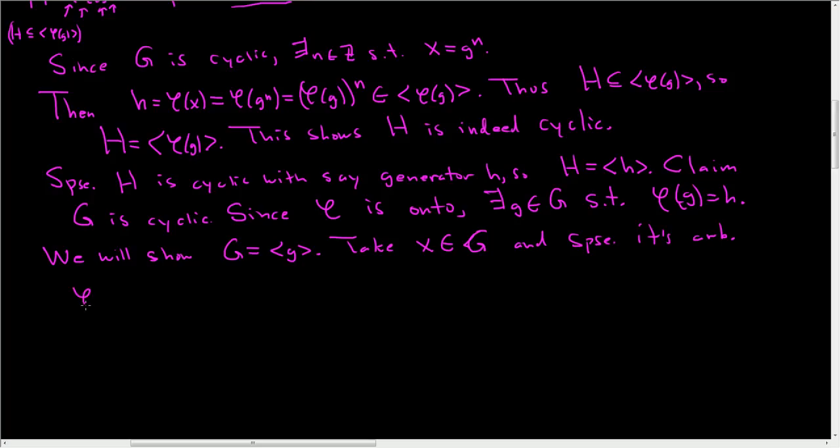Let's look at phi of x. So note, phi of x is in H. Thus, there exists an integer which we'll call M such that phi of x can be written as h to the M. And again, the goal here is to show that x is a power of little g. All we have right now at this point is this and this. So let's see if we can use this somehow.